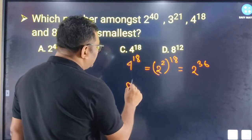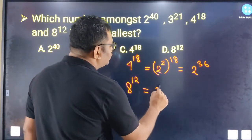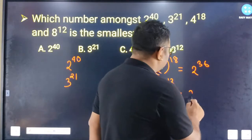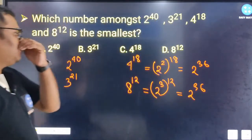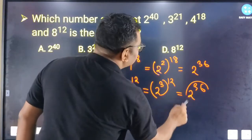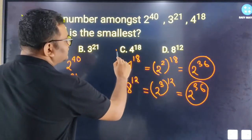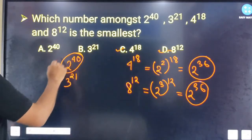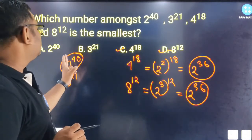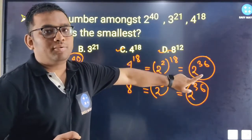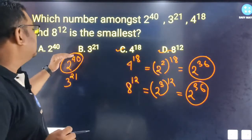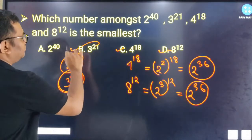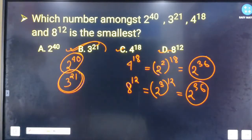Similarly, 8 to the power 12 — since 8 equals 2 to the power 3 — gives 2 to the power 36. So the simplified values are 2^40, and 2^36 for both 4^18 and 8^12. Comparing the options, 2 to the power 40 is not the smallest; 3 to the power 21 is the smallest number among all.